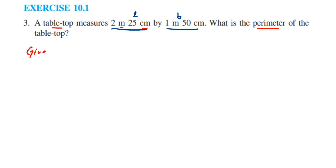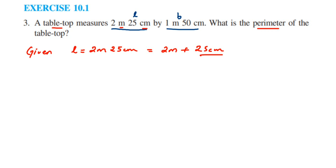What is given: length is equal to 2 meter 25 centimeter, which means 2 meter plus 25 centimeter. I'm going to convert 25 centimeter into meters — you can also convert meter into centimeter, it's completely up to you. We know that 1 meter is equal to 100 centimeter.